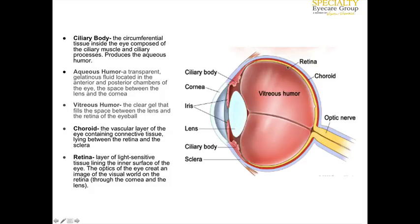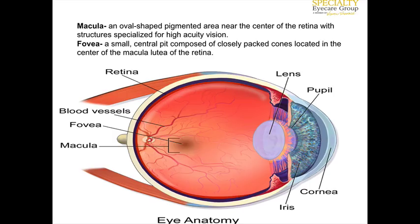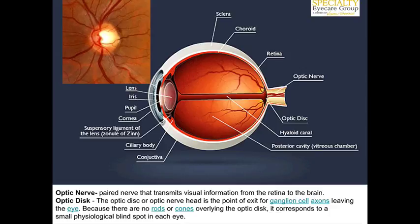The retina is a layer of light-sensitive tissue that contains the rods and cones. Within the retina itself, there's an area in the back of the eye called the macula. It's oval-shaped and pigmented, and in the center of it is the fovea, which is a small pit where the most highly packed cones are located. Cones pick up color.